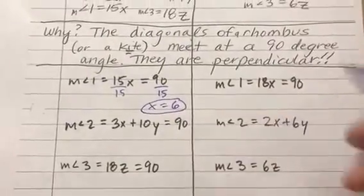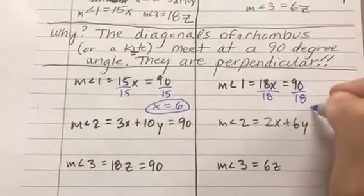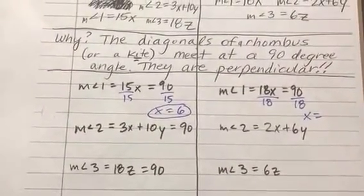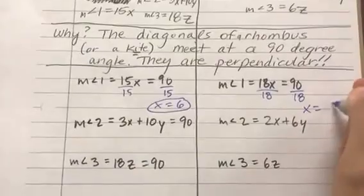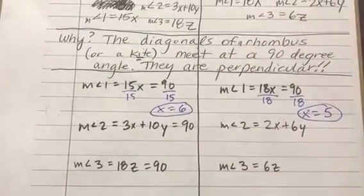Now, same thing over here. Get x by himself on one side. Now it says 90 over 18. So 90 divided by 18 is 5. Pretty much the same question, just slightly different numbers.